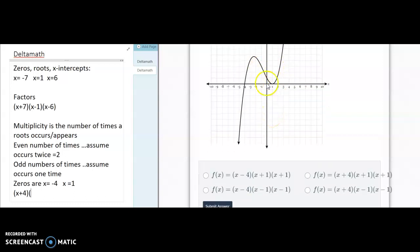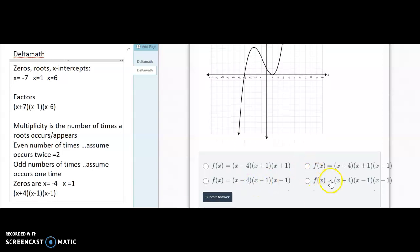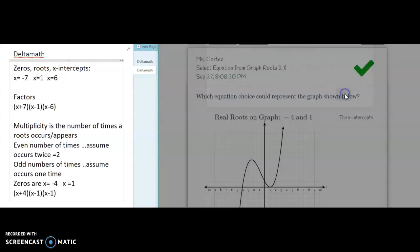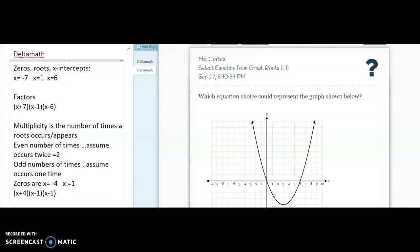Again, for delta math purposes, we're going to assume that it occurs twice. So my factor is x minus 1 and it occurs twice. And that's going to be the answer for this one. x plus 4 times x minus 1 times x minus 1. So for delta math purposes, we assume it's even.